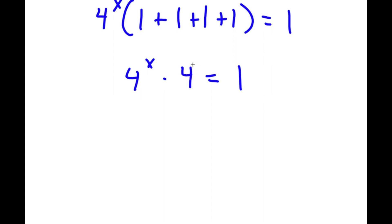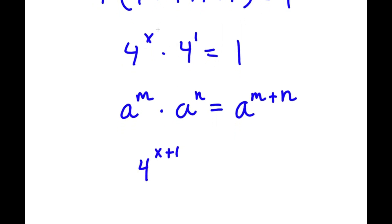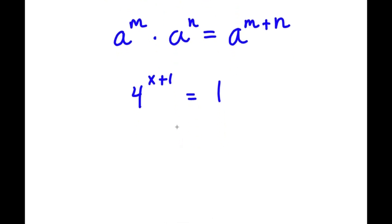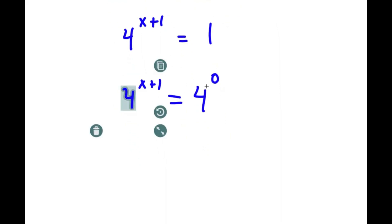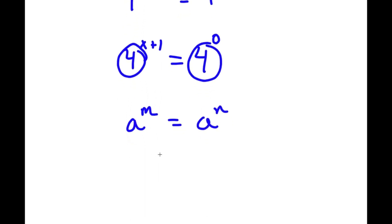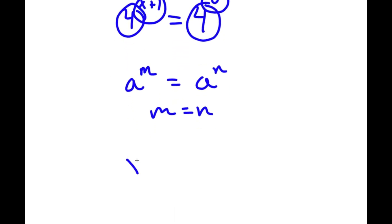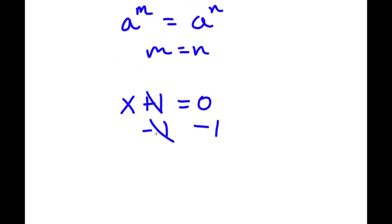4 here is the same thing as 4 to the power of 1. If I have something in the form a to the power of m times a to the power of n, this is equal to a to the power of m plus n. So 4 to the power of x times 4 to the power of 1 equals 4 to the power of x plus 1, and this is equal to 1. Now, anything to the power of 0 is simply equal to 1, so I can replace 1 with 4 to the power of 0 to make the two bases the same. So if I have a to the power of m equals a to the power of n, then m equals n, meaning x plus 1 equals 0.